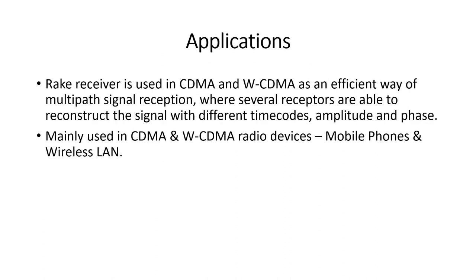Regarding applications, rake receivers are used in CDMA and WCDMA as an efficient way of multipath signal reception, where several correlators reconstruct the signal with different time codes, amplitude, and phase. They are mainly used in CDMA and WCDMA radio devices like mobile phones and wireless LAN.